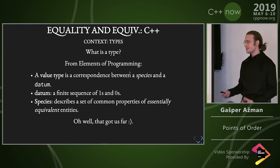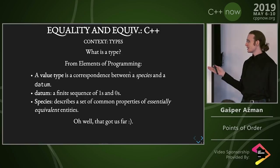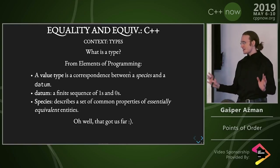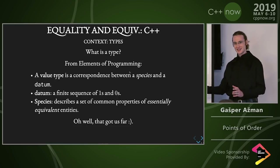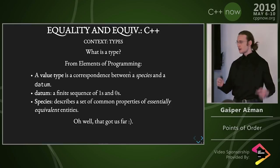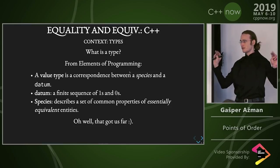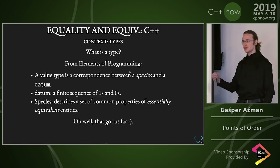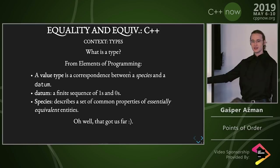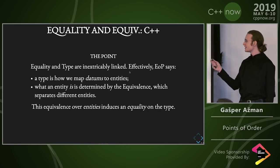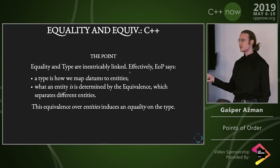A species describes a set of common properties of essentially equivalent entities. This is the real rub of the issue. Essentially equivalent entities — this is what you as a programmer need to decide on how this maps to your domain, and this is all in your head. This correspondence, as in mapping from and to, is not the function you can write. Computers don't deal with your head. A type is half in your head and half in the computer. And what 'essentially equivalent' means — that's how you write operator equals. Equality and type are inextricably linked. Equality effectively defines your type.